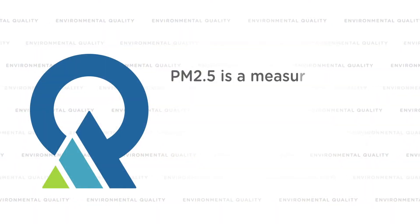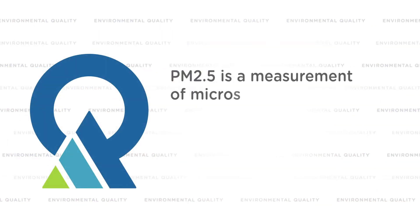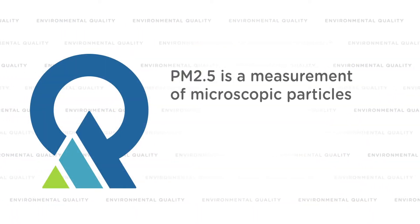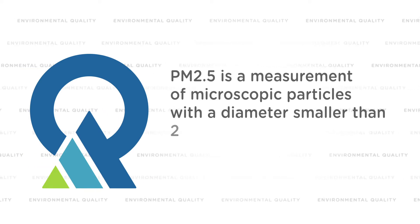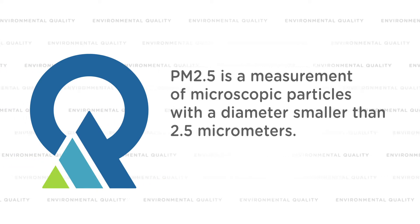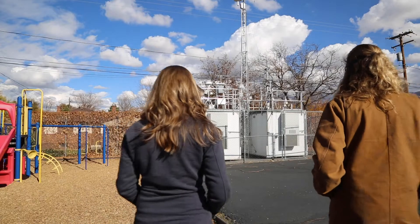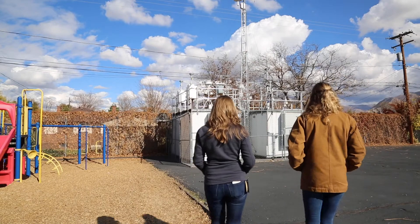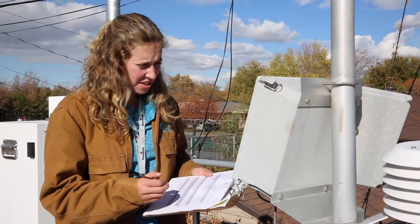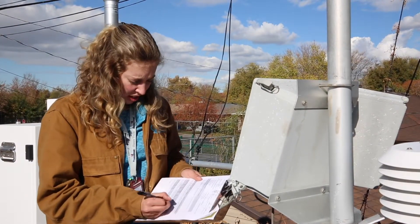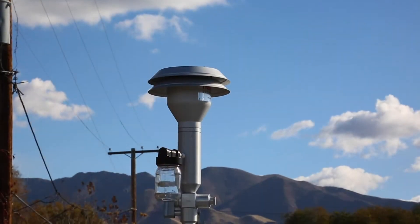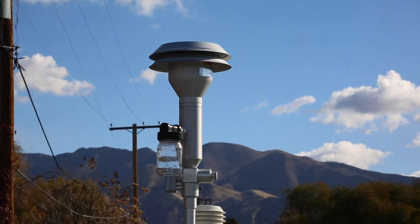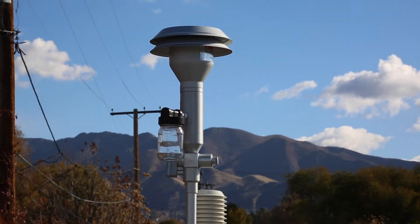The bigger stuff sticks to the filter and the really small stuff might go through. Our filters are really good at catching even very small-sized particles. We put them on a machine and they collect particulate, whatever's in the air, for 24 hours. They pull air through this filter and all the stuff that is in the air gets trapped in the filter.